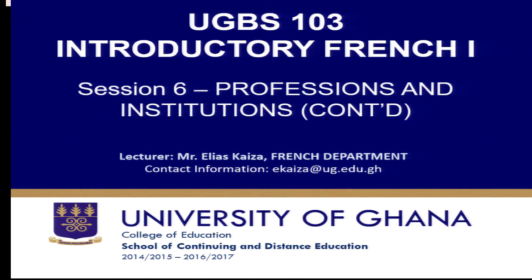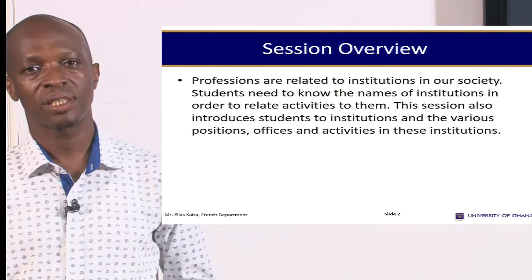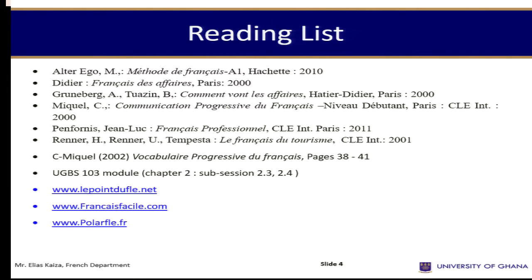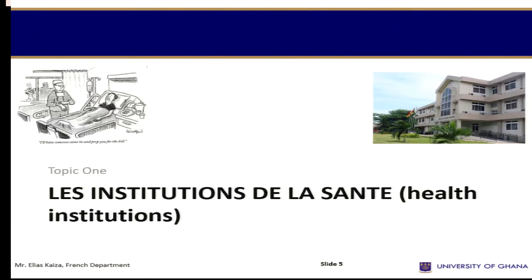In the previous session, session 5, we were looking at professions and institutions. This session will be the continuation of session 5. We have already talked about the overview and the outline. So this time, the key topics we are going to look at are: les institutions de la santé (health institutions), l'entrepreneuriat (entrepreneurship), et les entreprises de fabrication (manufacturing firms). The reading list is there — you can go through some of these materials to find complementary notes.